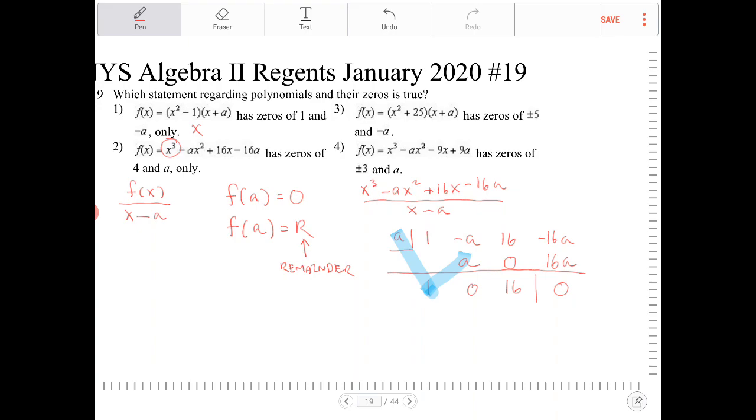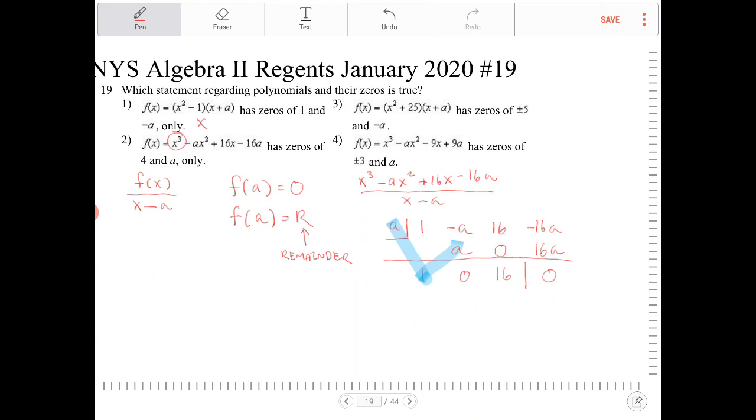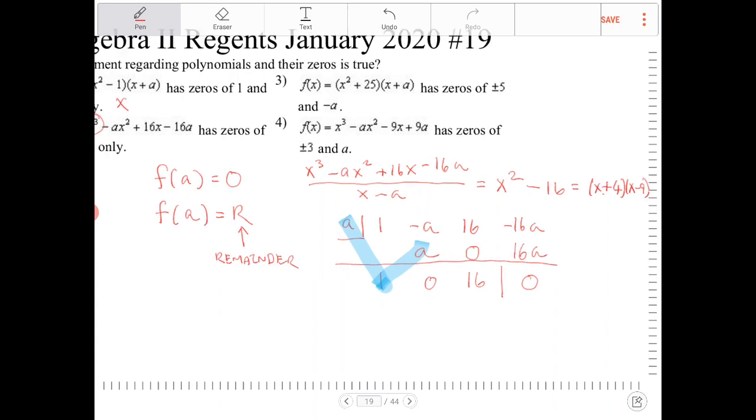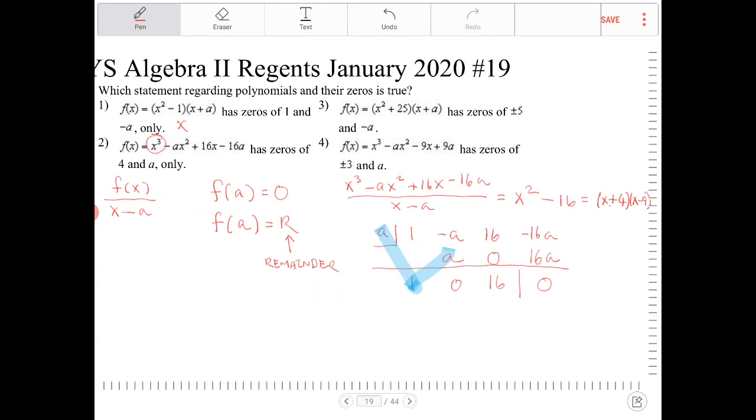So looking at this right now, I can tell that a is indeed a root. And the result is, if I were to divide x minus a into this cubic equation, what will result is, I will end up with x squared minus 16. And x squared minus 16 can be factored further. This will turn into x plus 4 times x minus 4. So we can see that the roots is not only 4, but also negative 4. So option 2 doesn't work.